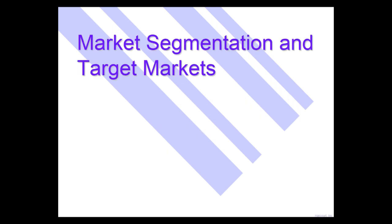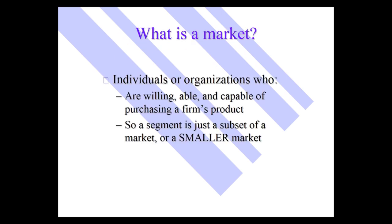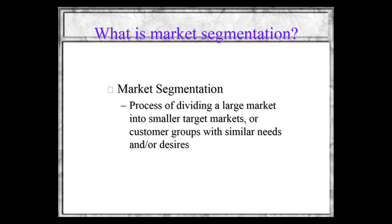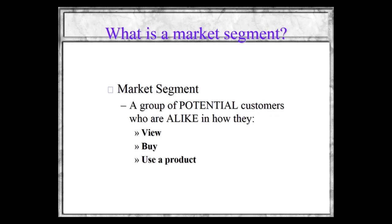What is a market? A market is individuals or organizations who are willing, able, and capable of purchasing a firm's product. A segment is just a subset of a market or a smaller market. Market segmentation is the process of dividing a large market into smaller target markets or customer groups with similar needs and/or desires. A market segment is a group of potential customers who are alike in how they view, buy, and use a product.